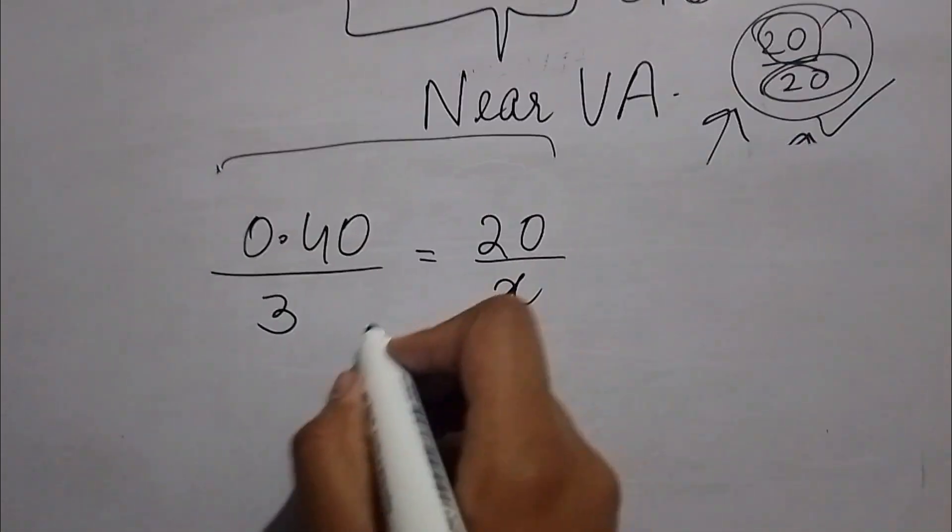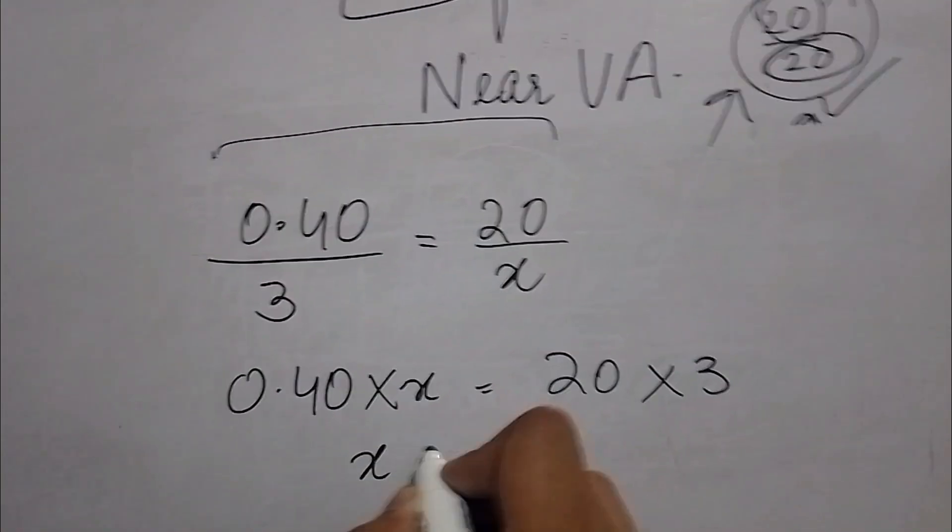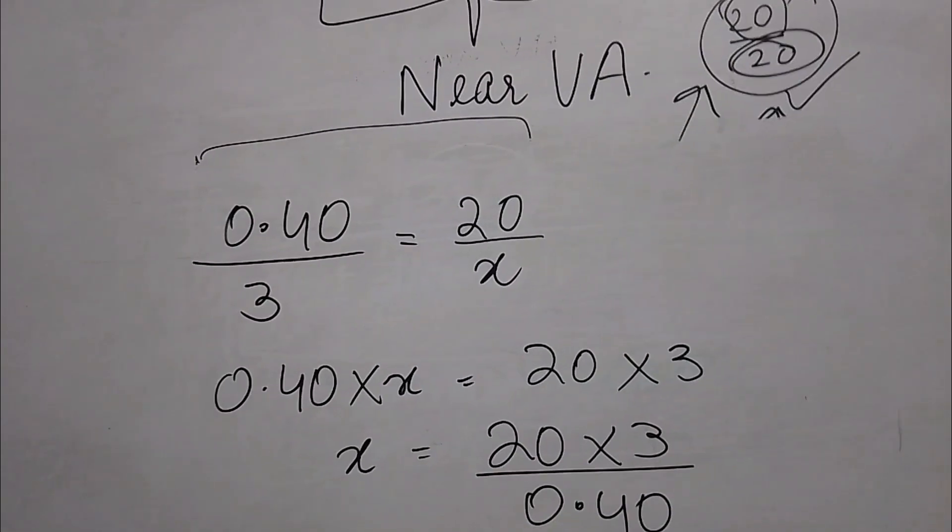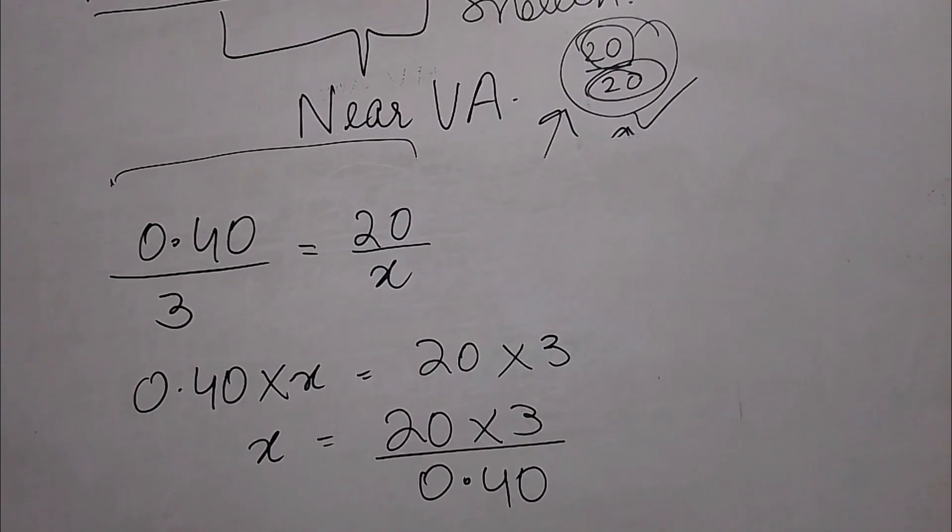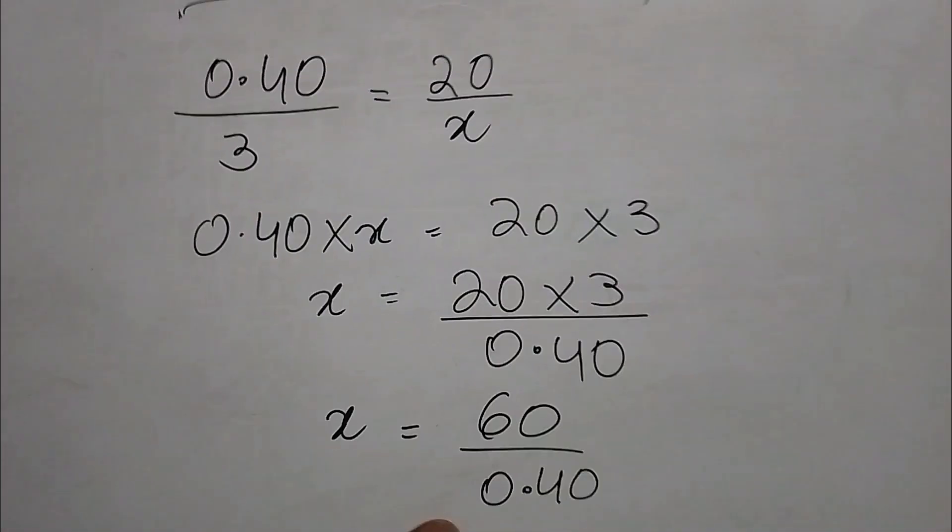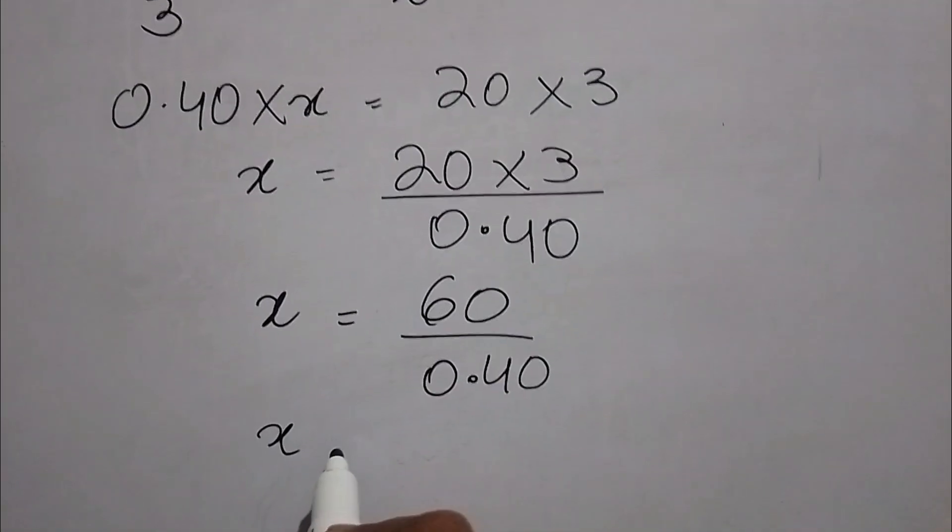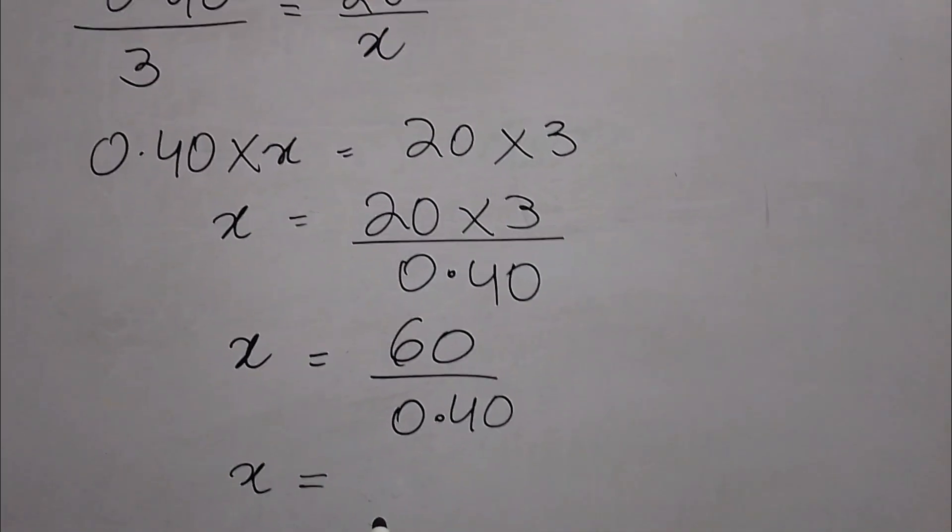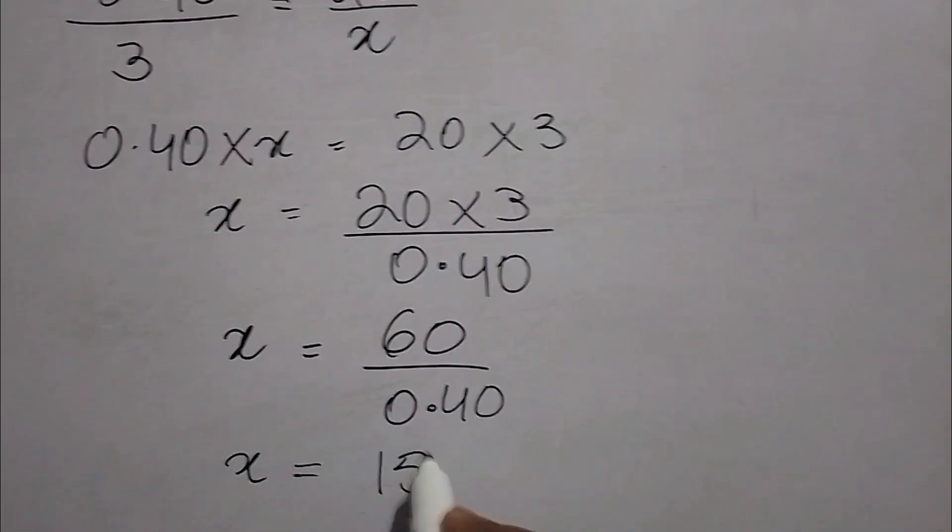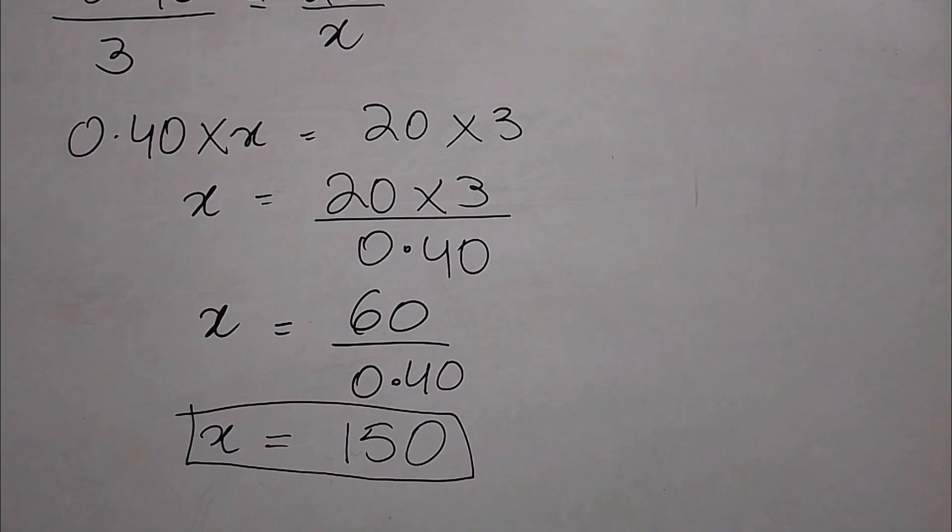We will cross multiply it in order to see what will be the reading. After we calculate it all, it will be 60 divided by 0.40. After dividing 0.40 into 60, we get 150. You can check and calculate on the calculator, you can see that 150 is coming.